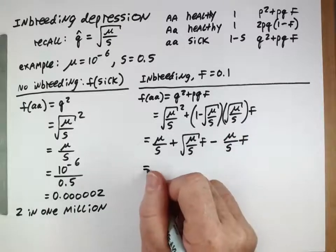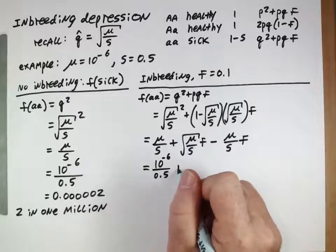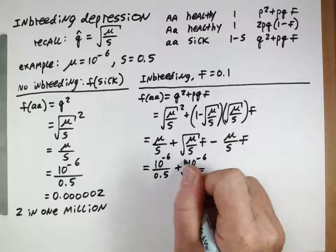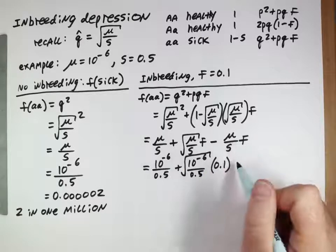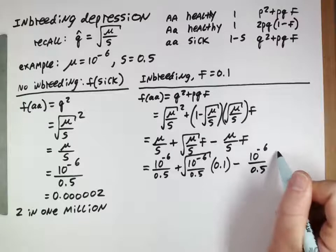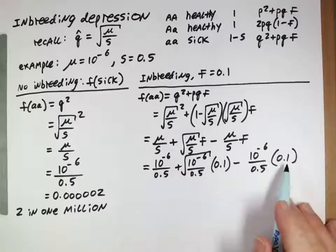Now if we put numbers in: 10 to the minus 6 over 0.5 plus 10 to the minus 6 over 0.5 square root times 0.1, minus 10 to the minus 6 over 0.5 times 0.1.